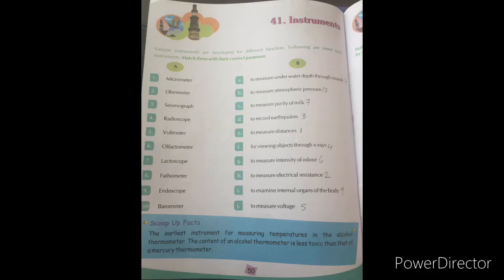Point number E, ohmmeter. Ohmmeter is used to measure electrical resistance. Answer is H.